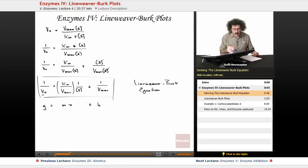Y is 1 over V0. M, the slope, is Km over Vmax. 1 over S is the independent variable. And 1 over Vmax, that's the Y-intercept.